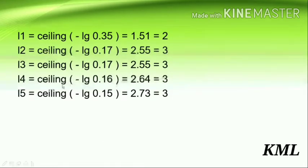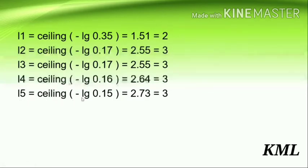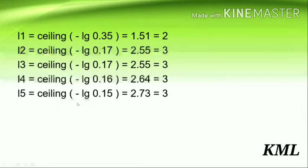L3 is ceiling of negative log base 2 of 0.17, same answer, giving 3. L4 is ceiling of negative log base 2 of 0.16, which equals 2.64, rounded up to 3. L5 is ceiling of negative log base 2 of 0.15, giving 2.73, rounded up to 3. When using the ceiling function, always round the floating point value up to the next integer.